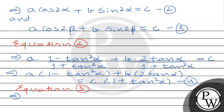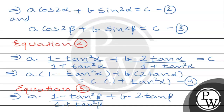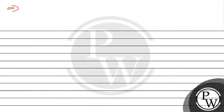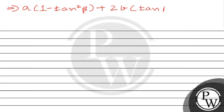Similarly, equation 2 ko imply karte hain aur apne key concepts ka use karte hain. Sin 2β ka formula use karke, β replace karne par aayega: A into (1 minus tan²β) divided by (1 plus tan²β) plus B into (2 tan β) divided by (1 plus tan²β) equals C. Isko 1 plus tan²β se multiply karenge.